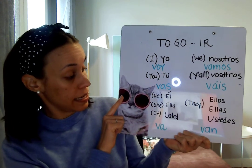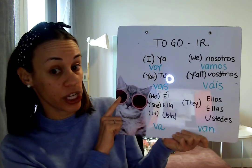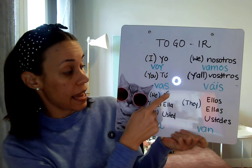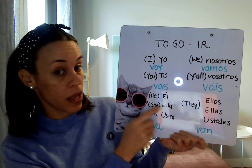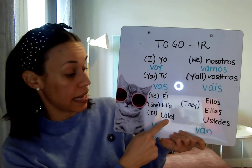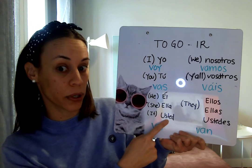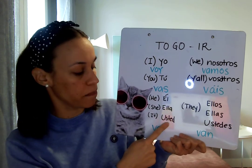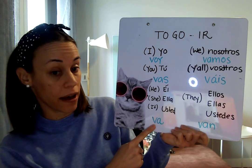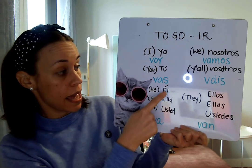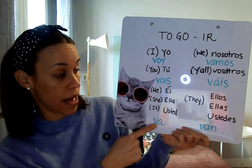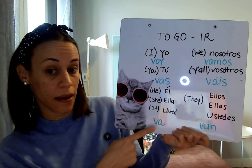If we want to say he, she, or it, we say él or ella. And if we're being polite, we say usted, for a person that we don't know very well. And then we say the verb: va. Él va. Ella va. Usted va.